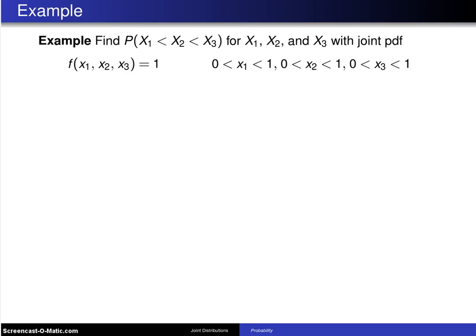Here's another example, this time for continuous random variables x1, x2, and x3. Find the probability that x1 is less than x2 is less than x3 for x1, x2, and x3 with joint probability density function f of x1, x2, x3 equals 1 for x1 between 0 and 1, x2 between 0 and 1, and x3 between 0 and 1.